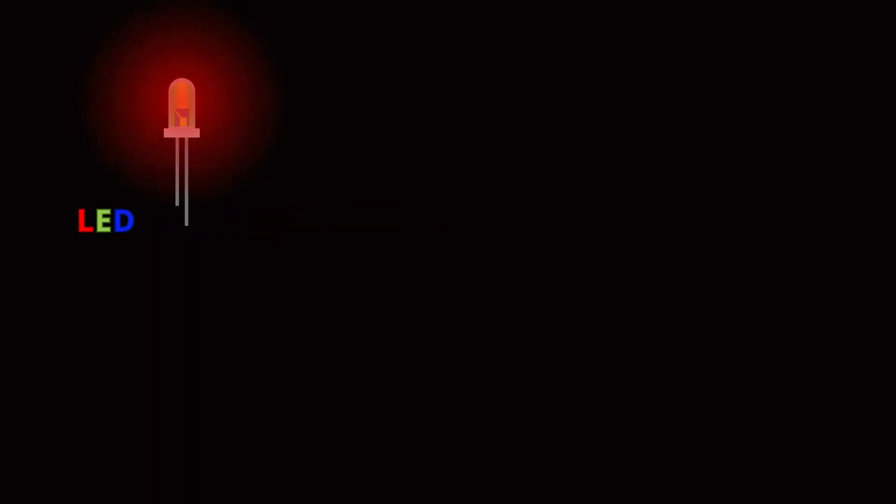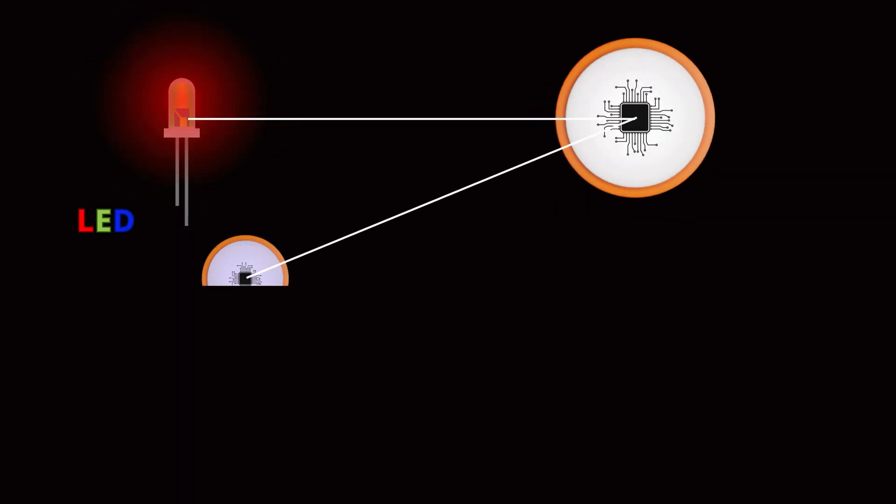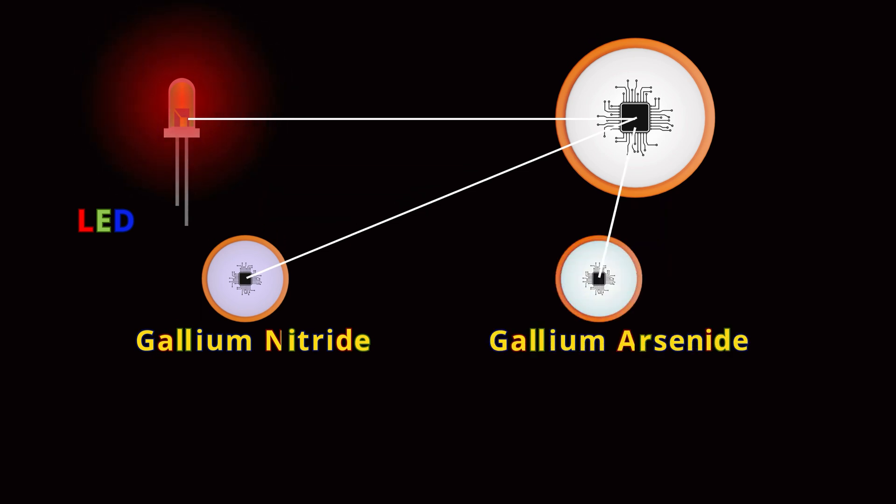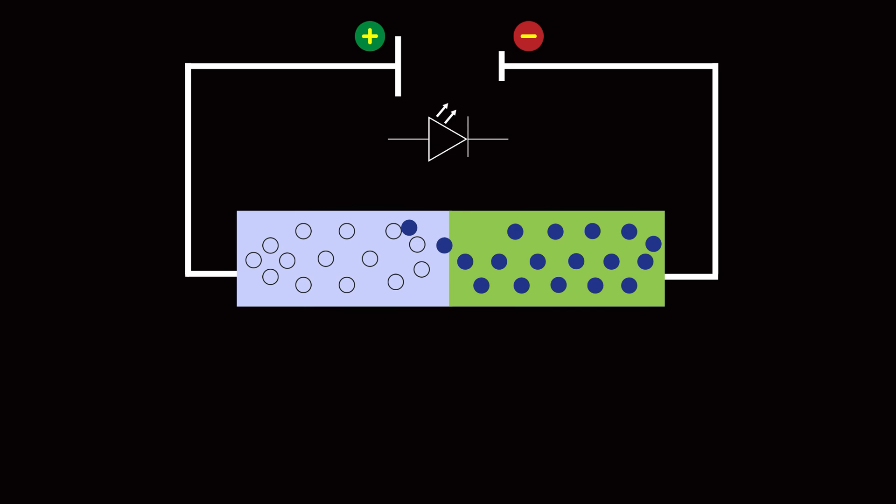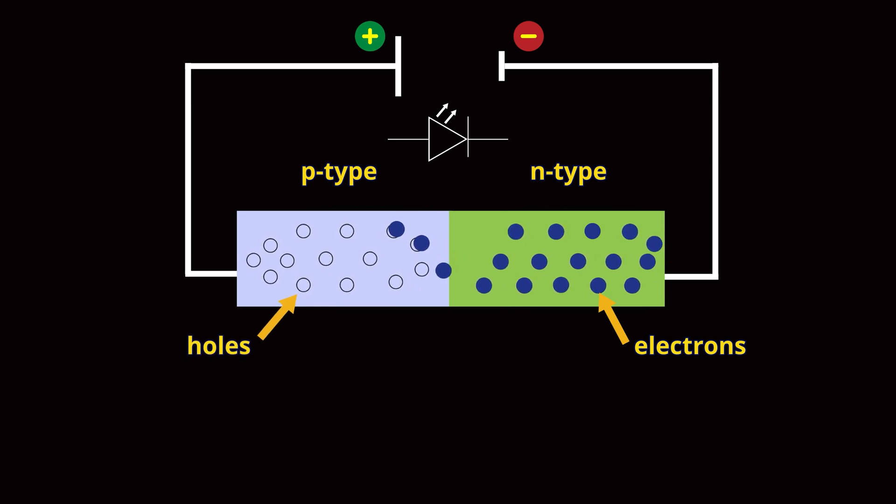Most LEDs are made up of materials like gallium nitride or gallium arsenide. These semiconductors have two layers, an N-type layer with extra electrons, and a P-type layer with holes, spaces for electrons to fill in.